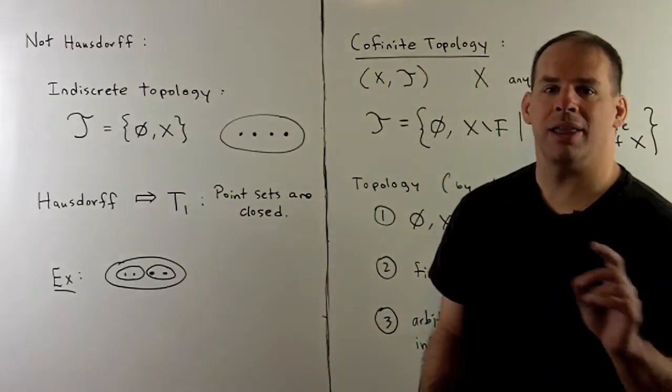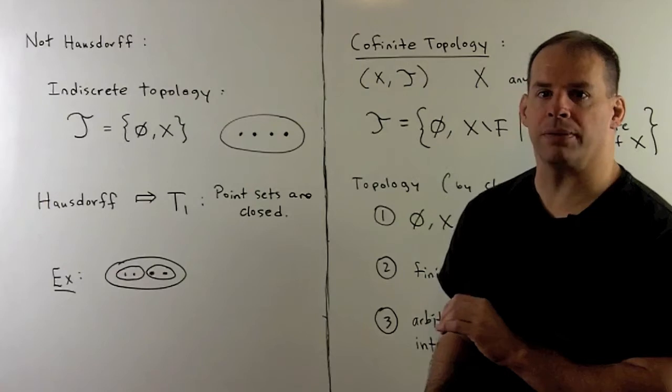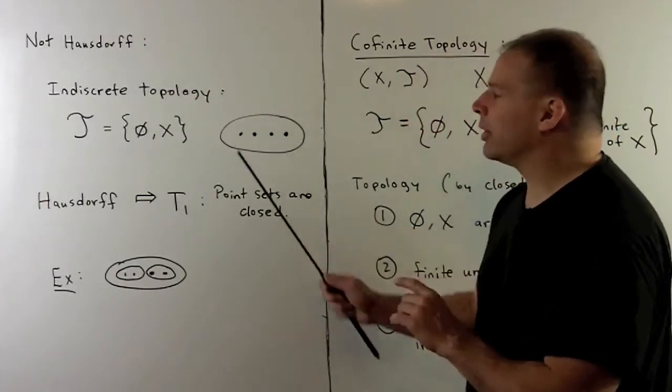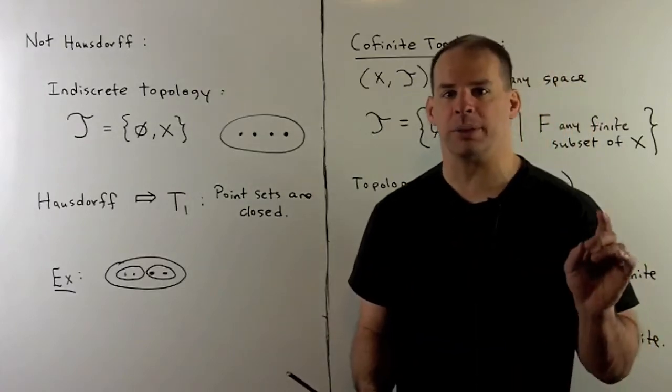If X has two or more points, then this topology is not Hausdorff. A topologist is going to be unable to tell points apart in the indiscreet topology.